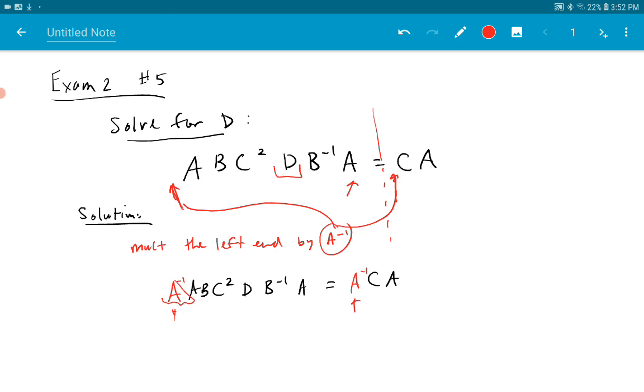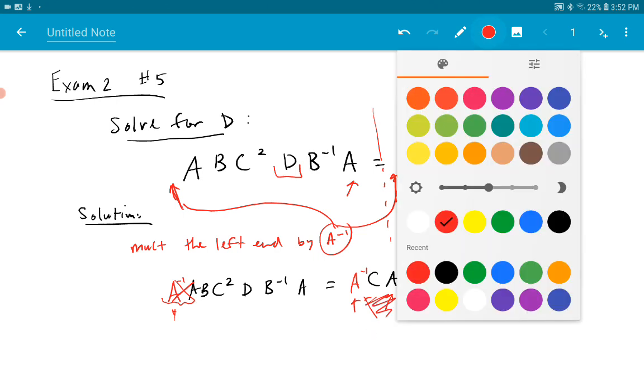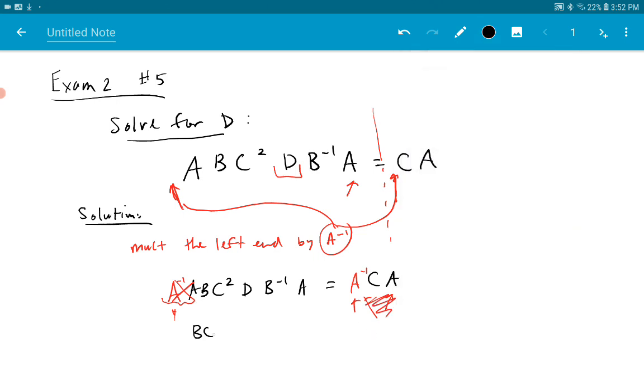These two cancel. These two do not cancel because they're not next to each other. So we have BC², DB⁻¹A equals A⁻¹CA.